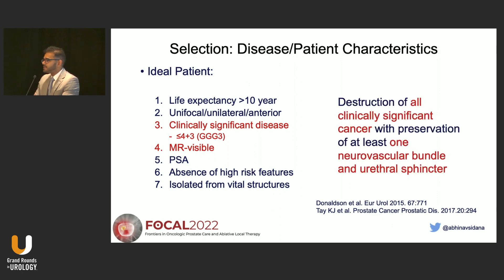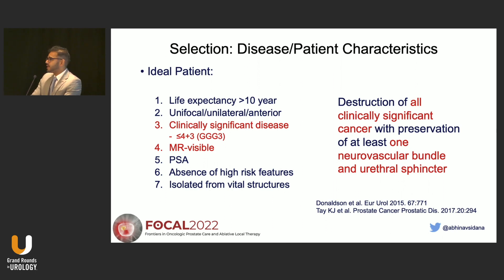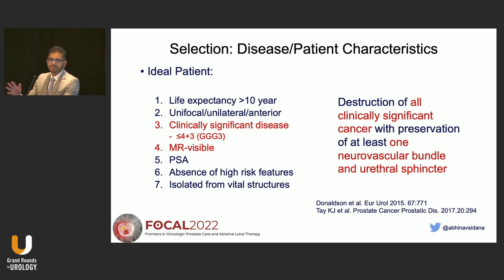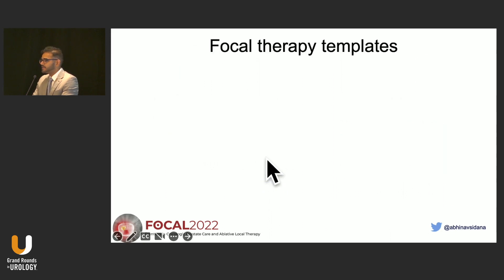The take-home message, which I follow most of the time: if you can destroy all clinically significant cancer with preservation of at least one neurovascular bundle and the urethral sphincter, the patient would be a candidate for focal therapy. There are some exceptions, but ultimately the goal should be not to leave a patient with untreated grade group 2 disease.